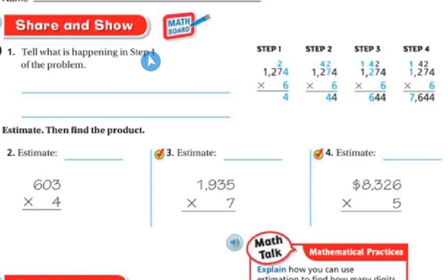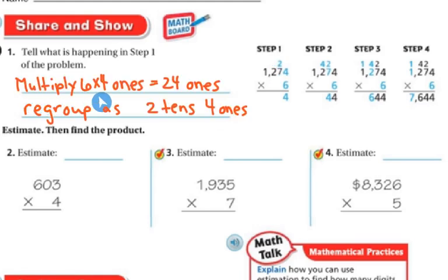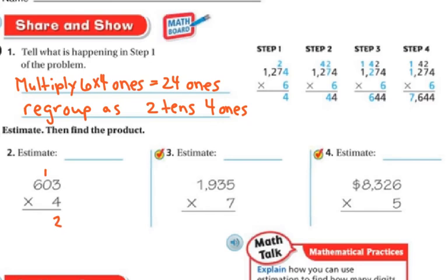Share and show. Tell what's happening in step 1 of the problem. In step 1 I'm doing 4 times 6 ones, which is 24 ones. I can regroup that as 2 tens and 4 ones. For the next problem with regrouping: 4 times 3 is 12 — regroup, putting 1 ten above and 2 ones below. Then 4 times 0 is 0, but with the 1 ten regrouped I have 1 ten. Then 6 times 4 is 24.